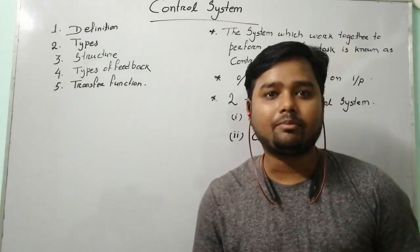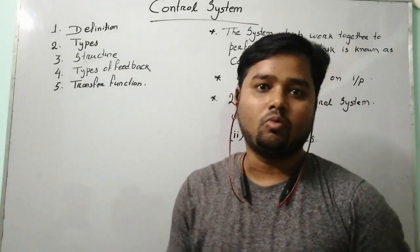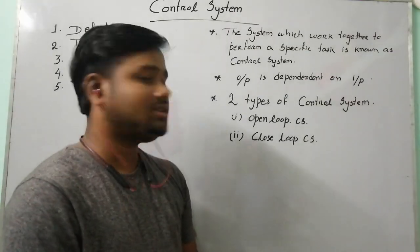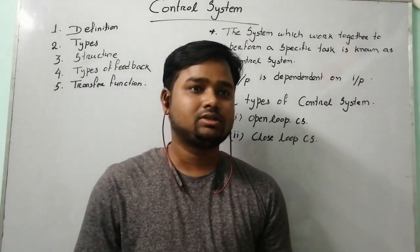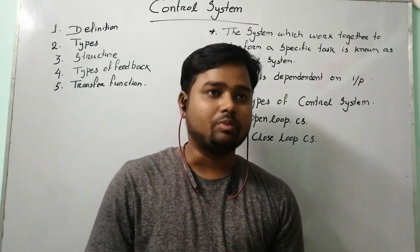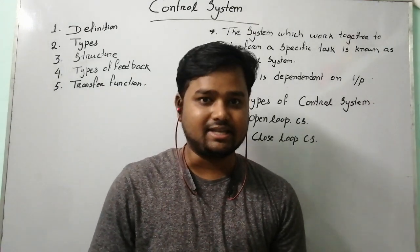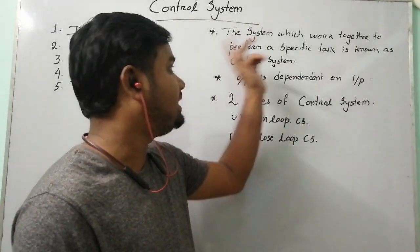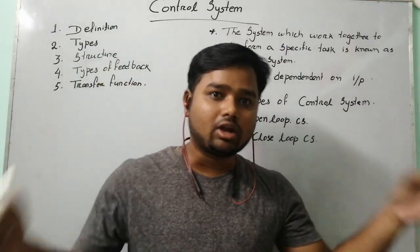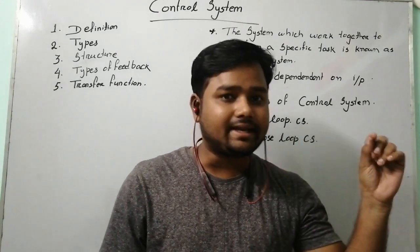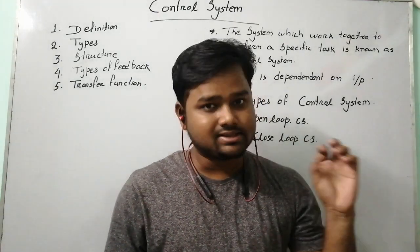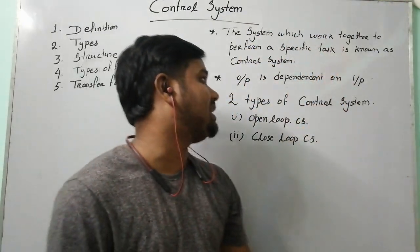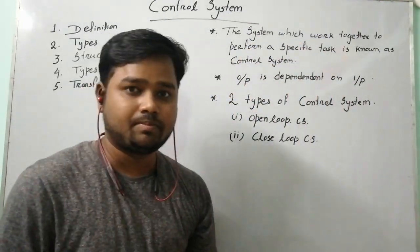First of all, we have to know what is a control system — what is the definition of a control system? The system which combines together to perform a specific task is known as a control system. It means three or more systems when combined together to do a particular work is known as a control system.